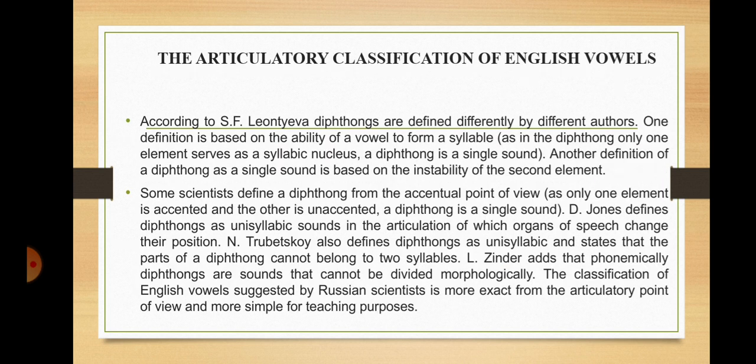According to Leontyeva, diphthongs are defined differently by different authors. One definition is based on the ability of a vowel to form a syllable; another defines a diphthong as a single sound based on the instability of the second element; and some scientists define a diphthong from the perceptual point of view. Jones defines diphthongs as unisyllabic sounds in the articulation of which the organs of speech change their position. Trubetskoy also defines diphthongs as unisyllabic and states that parts of a diphthong cannot belong to two syllables. Zinder adds that phonemically, diphthongs are sounds that cannot be divided morphologically. The classification of English vowels suggested by Russian scientists is more exact from the articulatory point of view and more simple for teaching purposes.